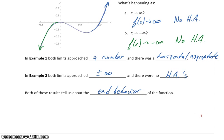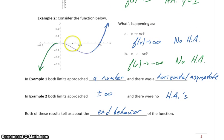By end behavior we mean what's happening at the extreme values of x. As x continues to increase, getting larger and larger, what's happening to our function? And as x gets smaller and smaller, what's happening at those extreme values of x?